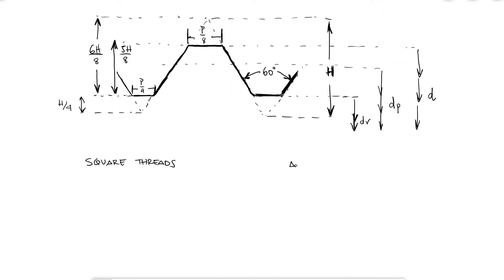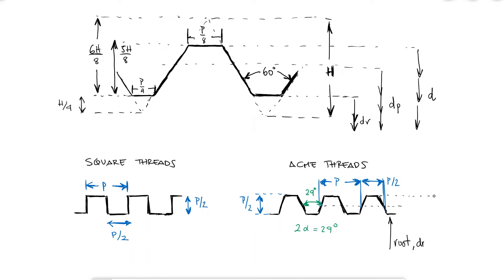Thread profiles mostly depend on the application. For example, square and ACME threads are profiles used for screws when you want to transmit power. The square threads are half a pitch tall and even though modifications are common, the ACME threads also follow that rule with a 29 degree angle between crests usually referred to as two alpha.